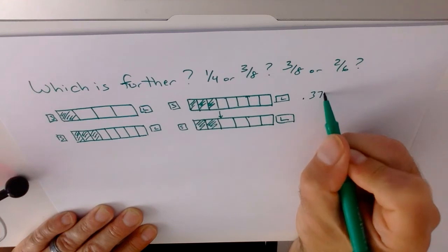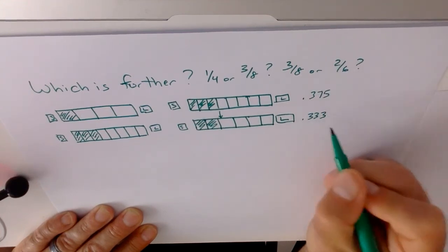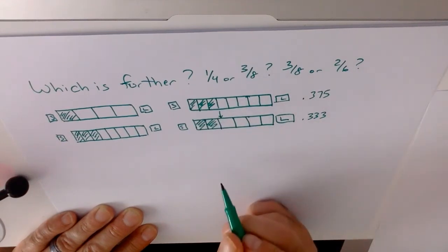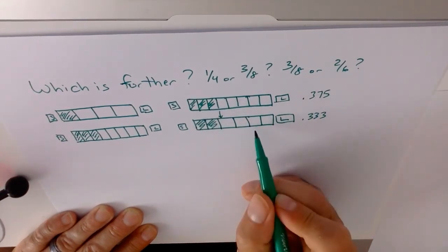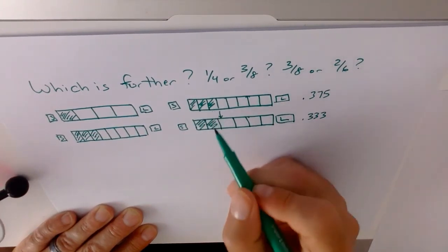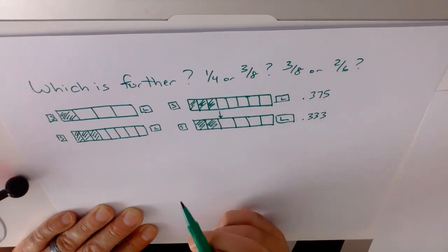0.375 is further than 0.333. But that very tiny difference is only going to show up if your eighths and your sixths are pretty well established like this. It's not going to come out right if you try to do it from left to right. So again, dividing, I think, is a much easier way to do this.